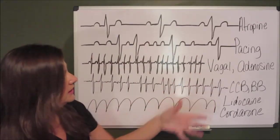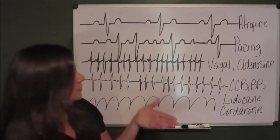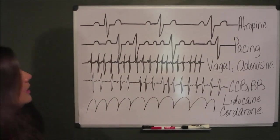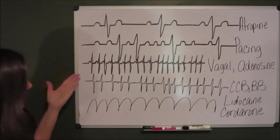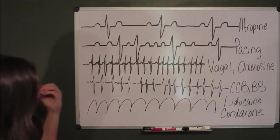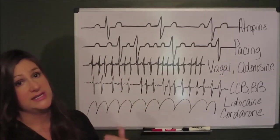So transcutaneous pacing is the only thing that we can do for a 3rd degree. Next underneath 3rd degree, I have a very poorly drawn out SVT.